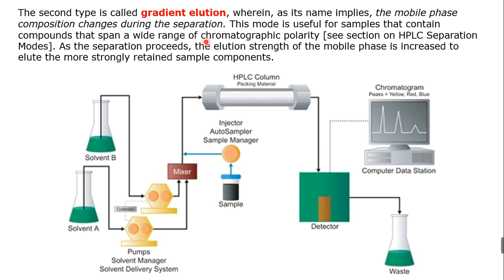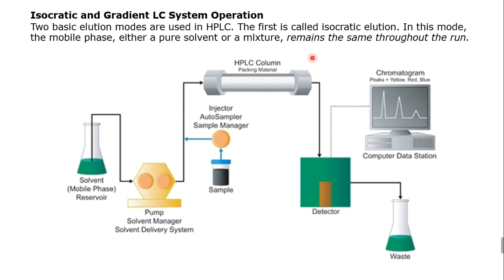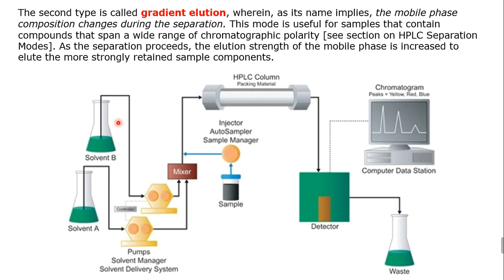Gradient elution uses two different solvents — solvent A and solvent B — placed on top of the HPLC machine in separate bottles. Each solvent has its own pump, and both pumps connect to a mixer. After the mixer, there is a sample injector port, and then the mixture goes to the HPLC column.